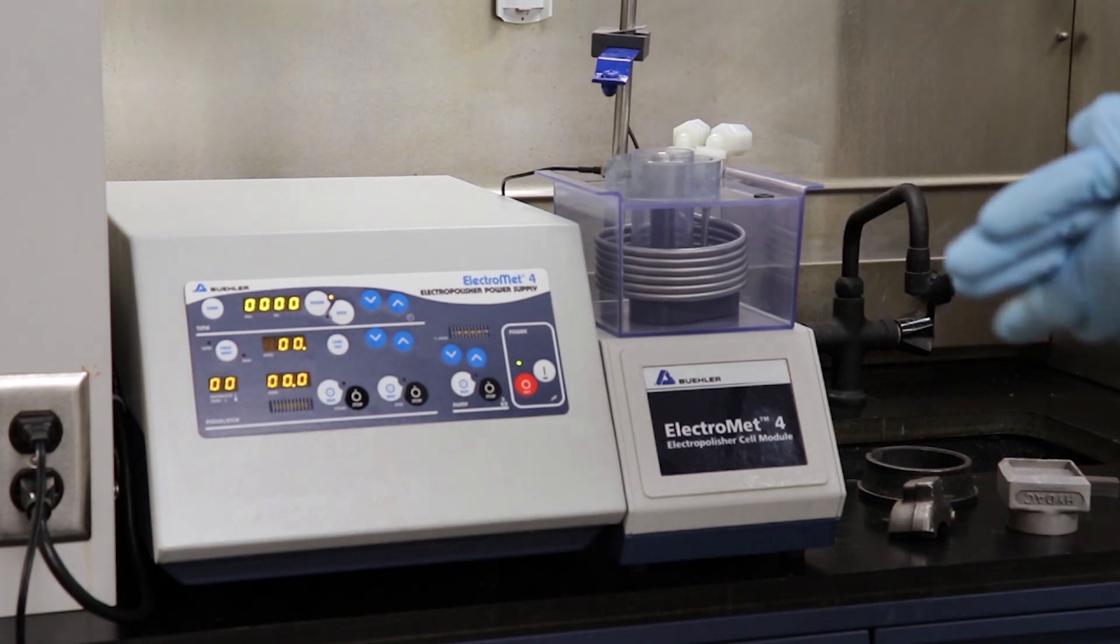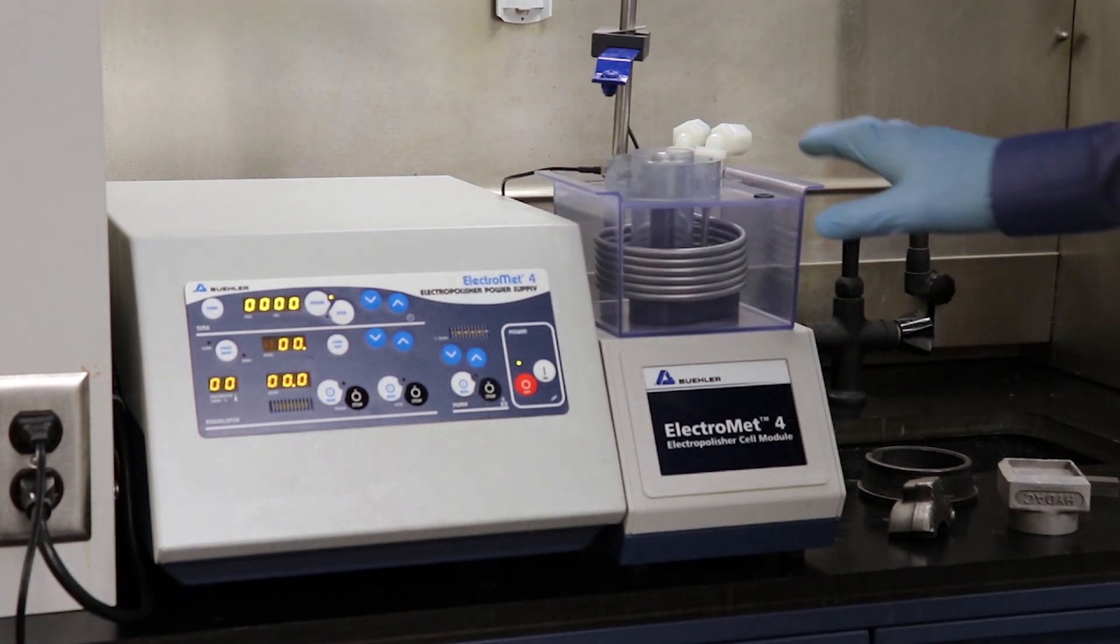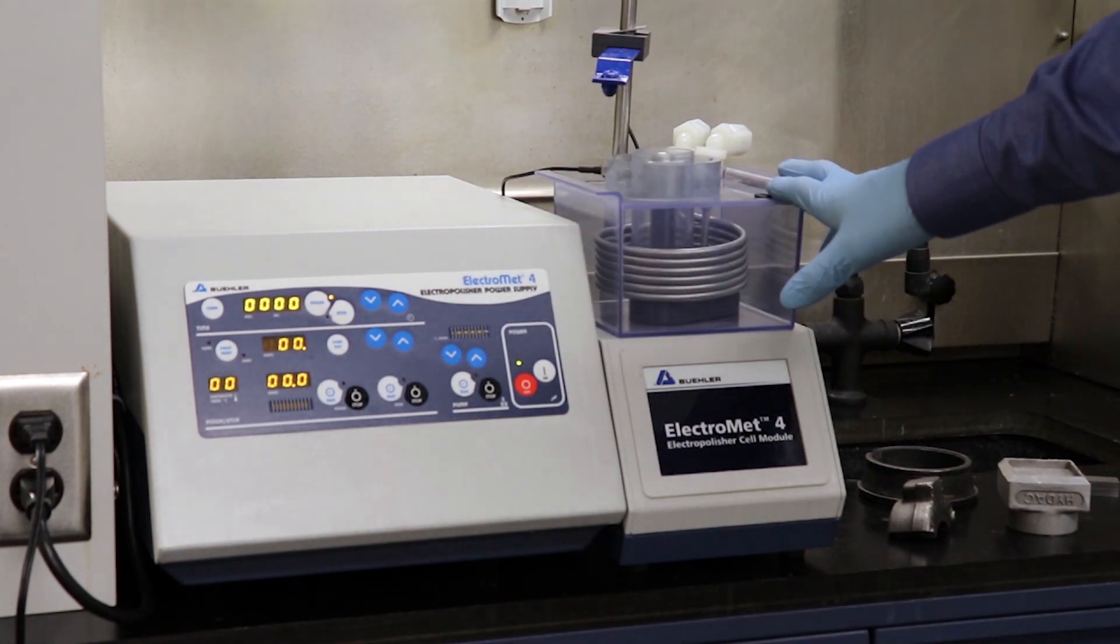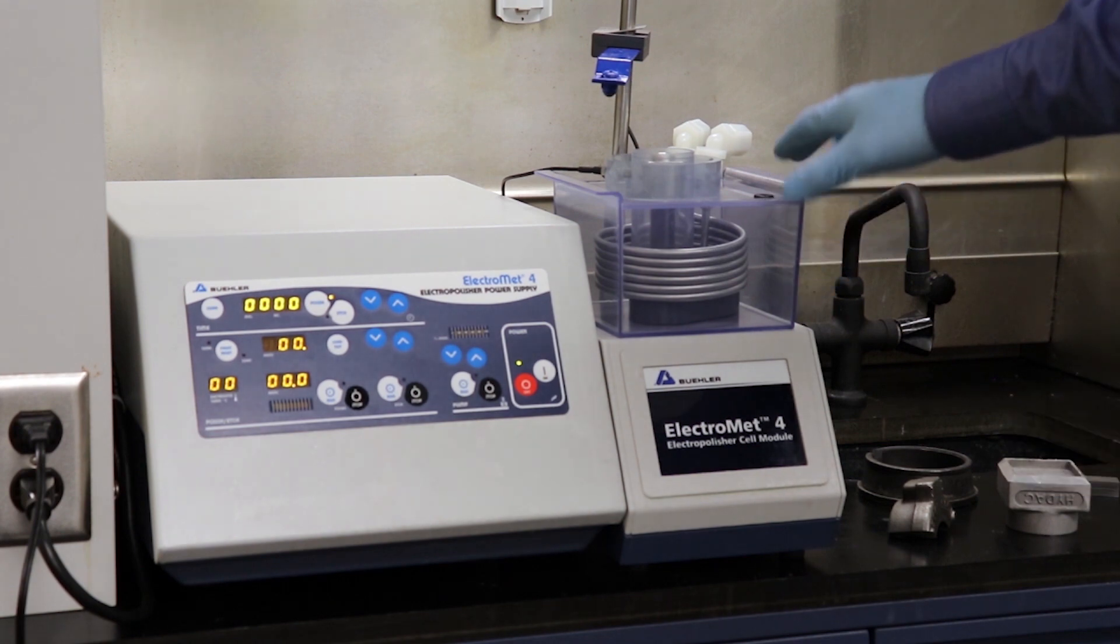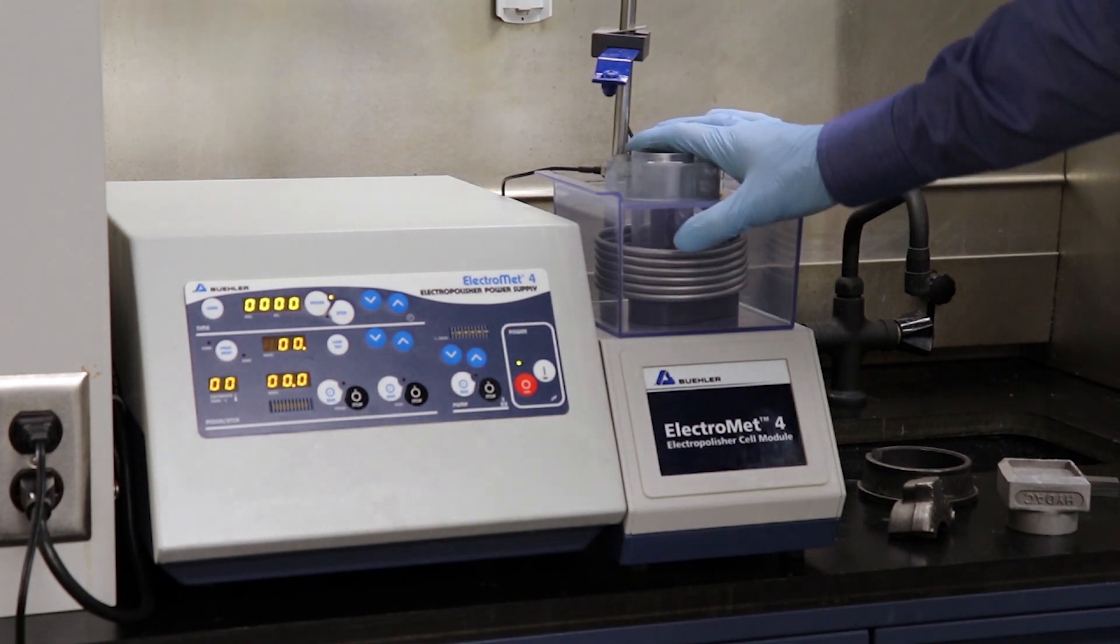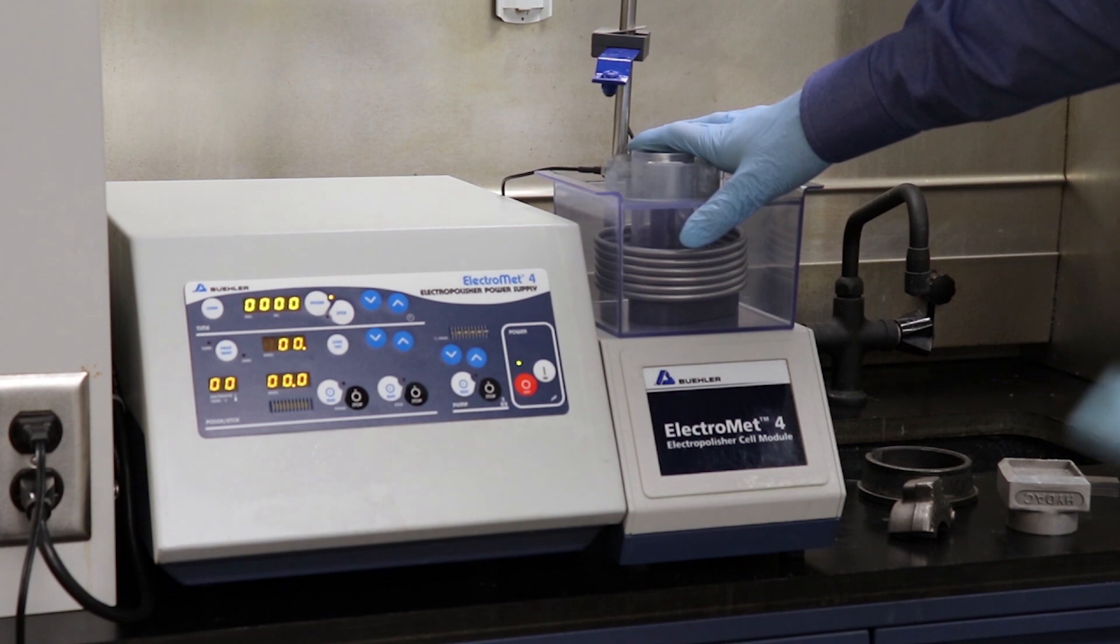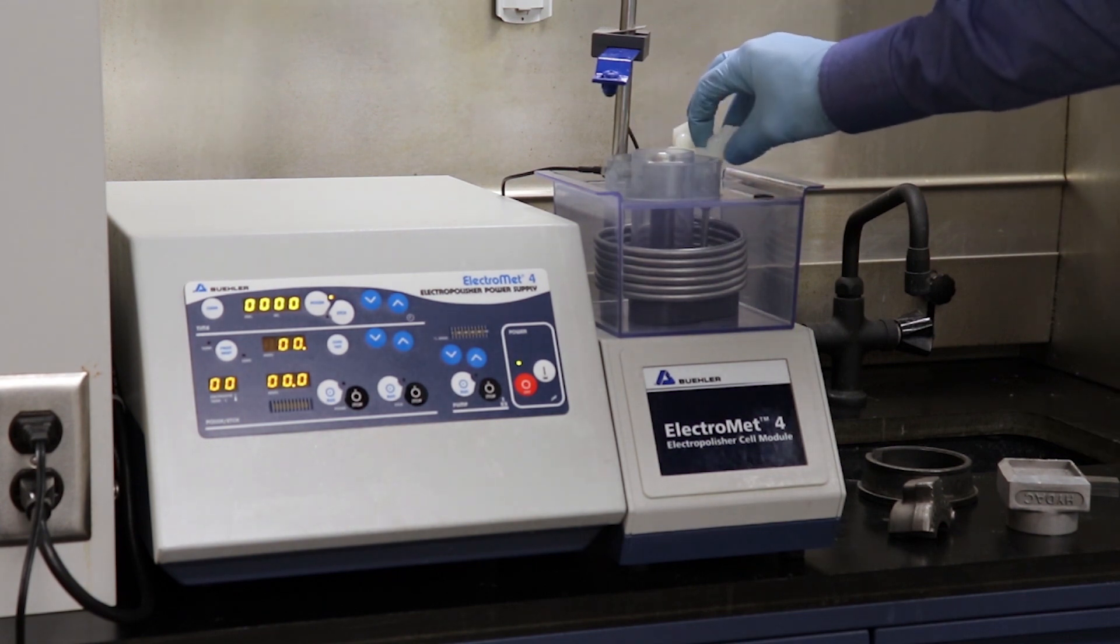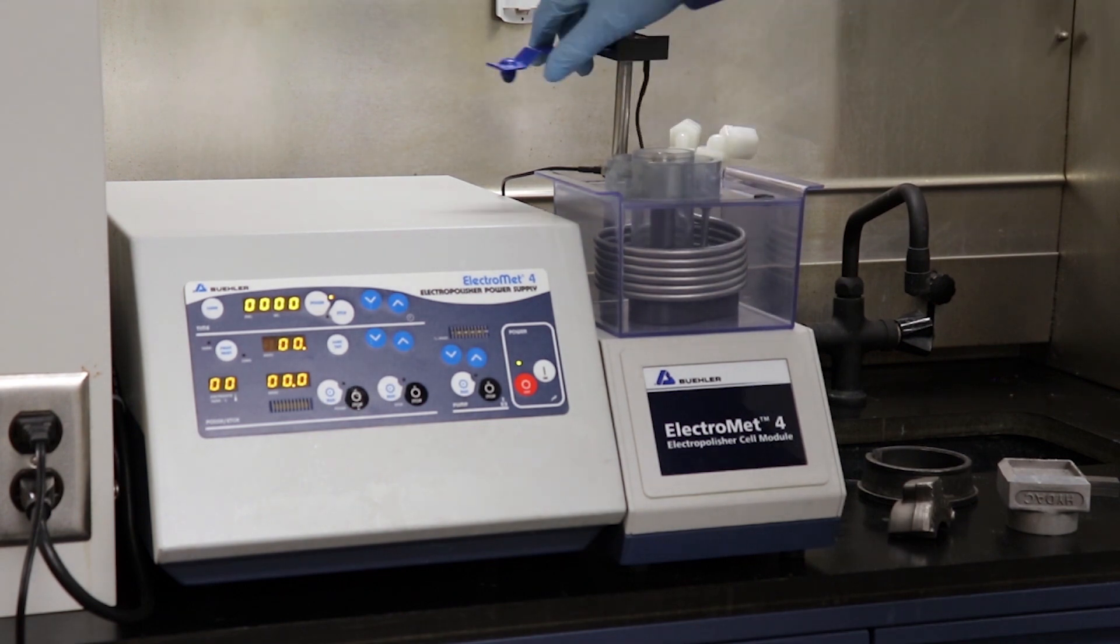The ElectroMet 4 polisher consists of a power supply and electrolytic polishing cell. Very easy to use. The polishing cell contains your chemical electrolyte that we're going to use to prepare the sample material. It has integrated cooling lines. Some electrolytes require cooling during polishing.